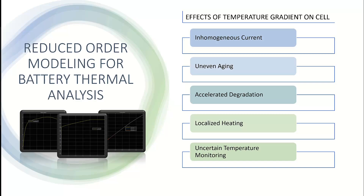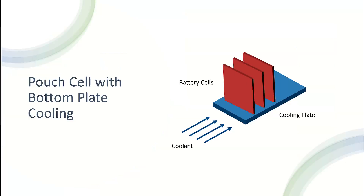I will now demonstrate the temperature gradient on a cell. You are looking at a pouch cell. The cooling plate attached at the bottom of the cell passes a coolant to maintain optimum temperature in the cell. Once the current passes, you can gradually observe the temperature gradient forming across the cell. Analysis of this thermal gradient is where MathWorks comes in.